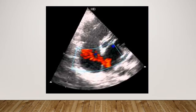Here's a color flow view of an atrial septal defect. You can see the color flow going through the defect and heading up towards the right ventricle. The right side of the heart is markedly enlarged. This is a sizable ASD — flow appears to cross a significant portion of the septum — and will probably need to be repaired. This is what a secundum ASD looks like on color flow.